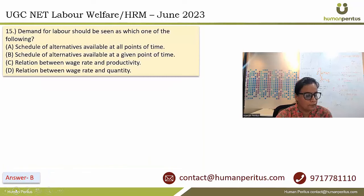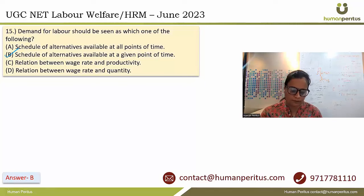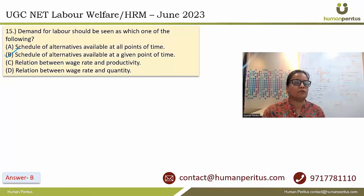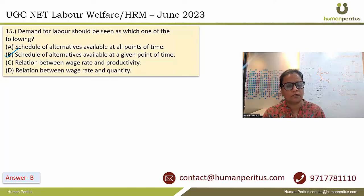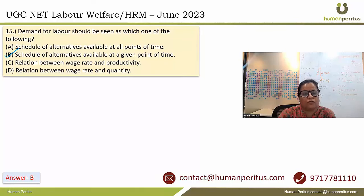Demand for labour should be seen as which of the following? The answer is B. Demand for labour is basically a schedule of alternatives for labour at a given point of time. Whenever we talk about demand for labour, it reflects the quantity of labour that employers are willing and able to hire at a specific wage rate in a given period of time. The answer is B.